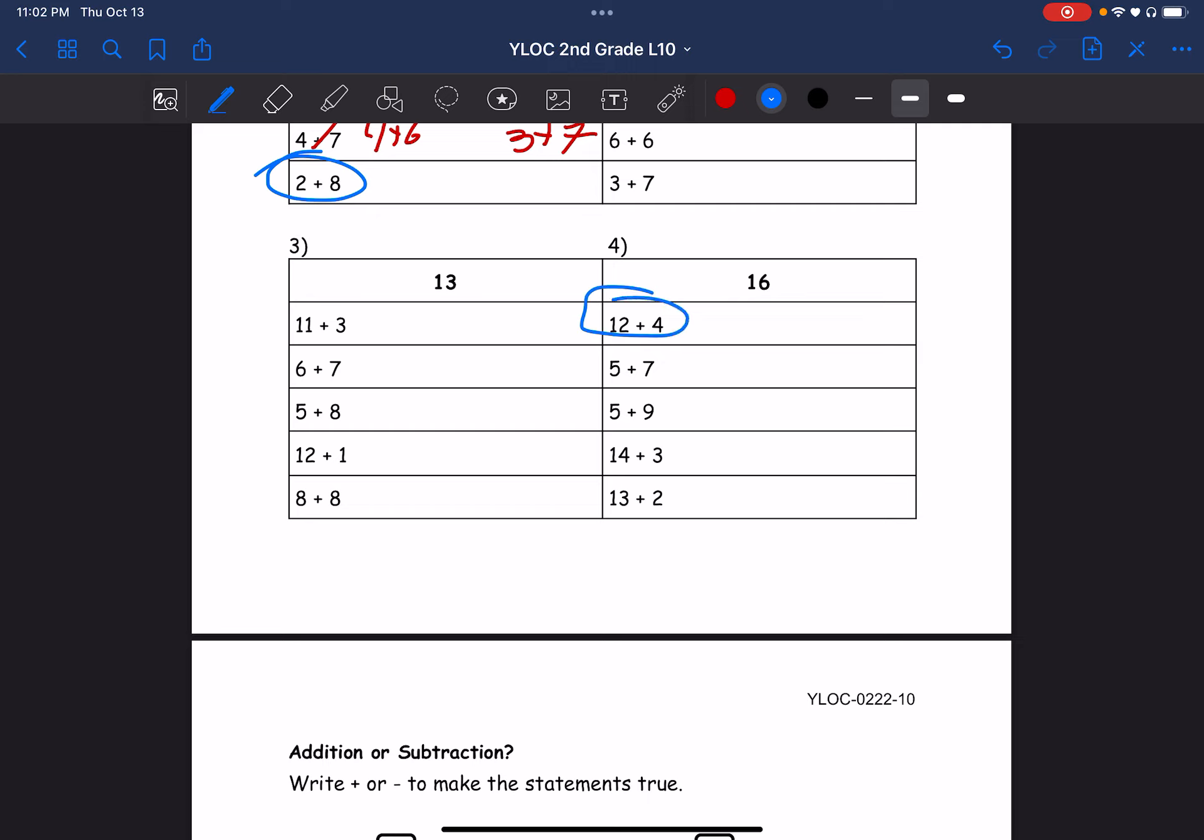5 plus 7, that doesn't equal 16, that equals 12. So we have to change it to make it equal 16. We can do 5 plus 11 or 9 plus 7.